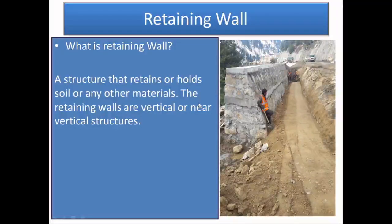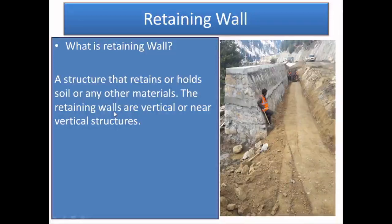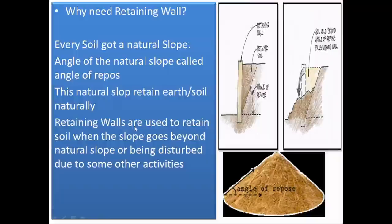What is a retaining wall? It is something that retains or holds soil or any other material. Retaining walls are vertical or near-vertical structures, just as shown in this particular picture.